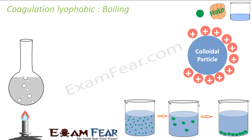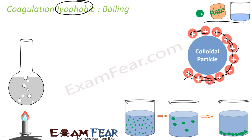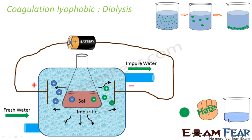The next method is boiling. When you boil, the adsorbed layer is disturbed — the charge is disturbed because of the heat. The kinetic energy of the system increases, the particles move at a higher speed, and the positive or negative charge that was adsorbed on the colloidal particles gets removed. Since the charge is removed, the particles settle down. This is also for lyophobic sols — the particles hate the solvent, and the only reason they were in the solvent was the charge. On heating, this charge is gone, and the particles coagulate easily.